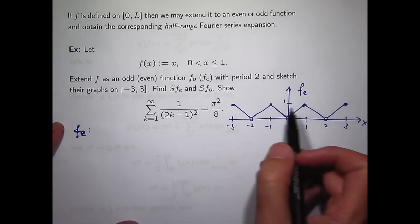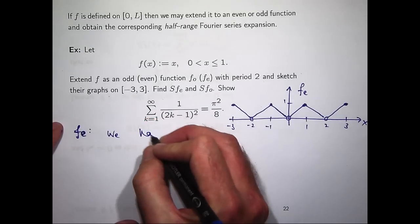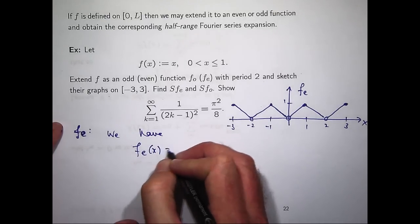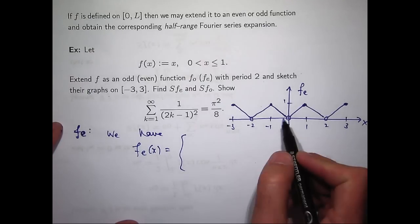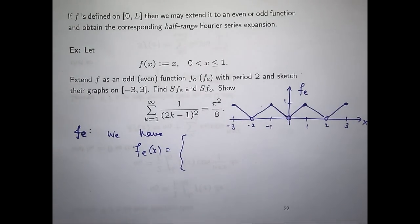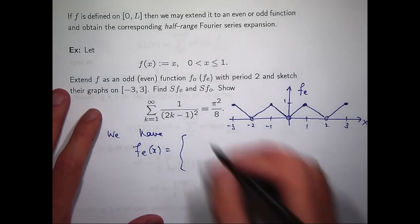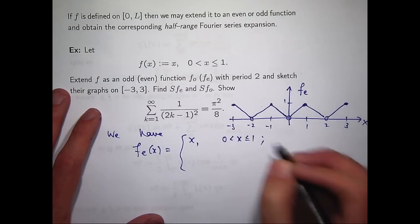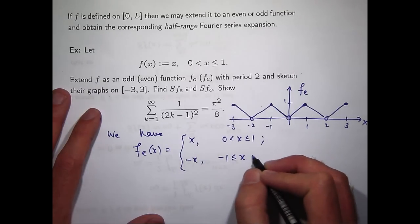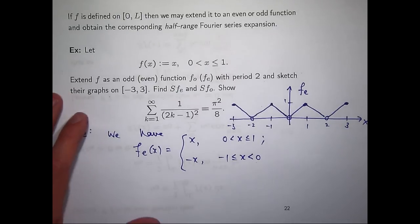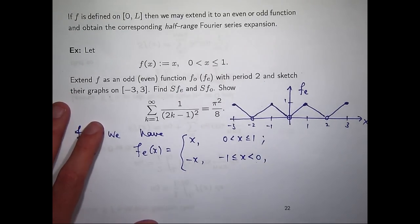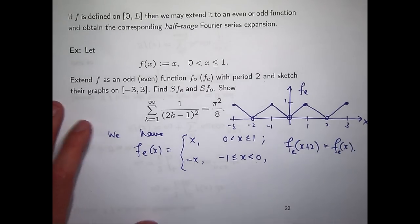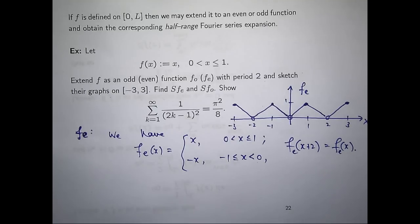Before we calculate the Fourier series, let's write down an expression for f_E. You can see it's x on the interval [0,1] and −x on [−1,0]. Once I've defined it on the interval minus one to one and know that the function is periodic, f_E is suitably defined. The periodic condition is f_E(x + 2) = f_E(x).